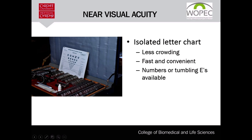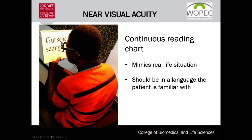The isolated letter chart has less crowding and can have numbers or tumbling E's as optotypes. It appeals to all age groups, including children, since they can easily draw or describe the characters even if they can't name them. The second type is the continuous reading chart, which is mostly for people who are literate, and therefore excludes a large population who may be unable to read. However, it is more representative of a real-life reading activity.